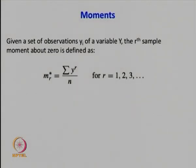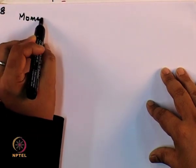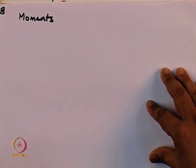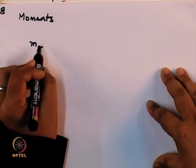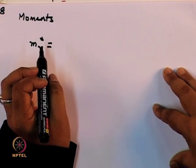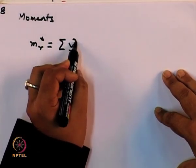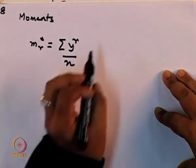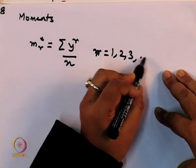We now come to the concept of moments. Pearson was the first statistician to make use of moments to describe data. The moment about 0 is defined as the summation of y to the power r divided by n, where r can take values 1, 2, 3, or any value. More generally, the moment about any value a is defined as m_r* equal to summation of (y minus a) to the power r, divided by n.